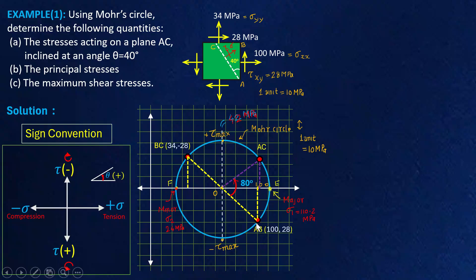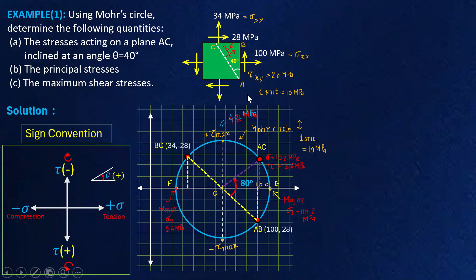So we have located plane AC graphically — it is inclined at 80 degrees with plane AB on the Mohr circle. The values on this particular plane are read directly from the graph: the x-coordinate of this point represents normal stress and the y-coordinate represents shear stress. Approximately measuring, the x-coordinate gives about 102 MPa and the y-coordinate gives approximately 26 MPa. So graphically, normal stress on plane AC is approximately 102 MPa and shear stress is approximately 26 MPa.